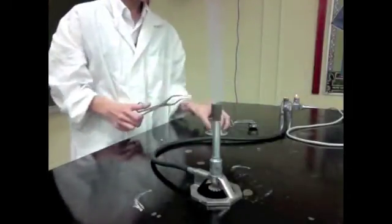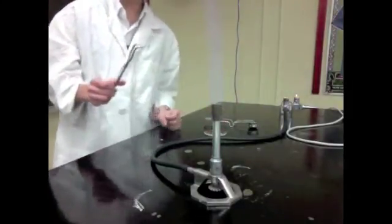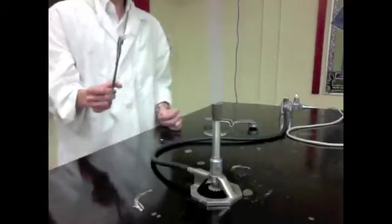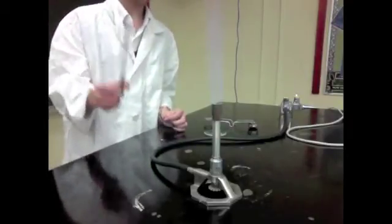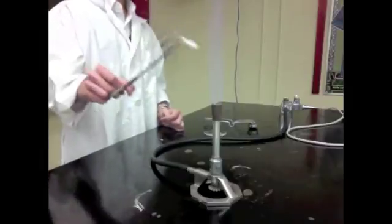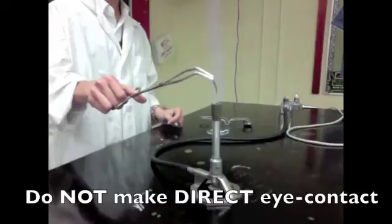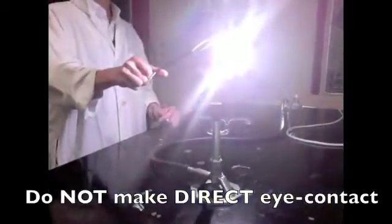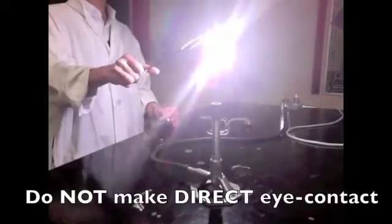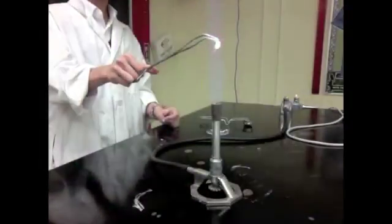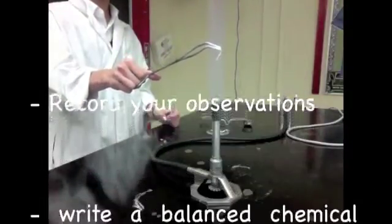So here's the magnesium ribbon. It looks like this, it's just a piece of ribbon. We're going to pick it up with our tongs and we're going to put it over the hottest part of the flame. Be careful not to stare at it too intensely because this may hurt your eyes. So here goes. And record the reaction in your lab reports.